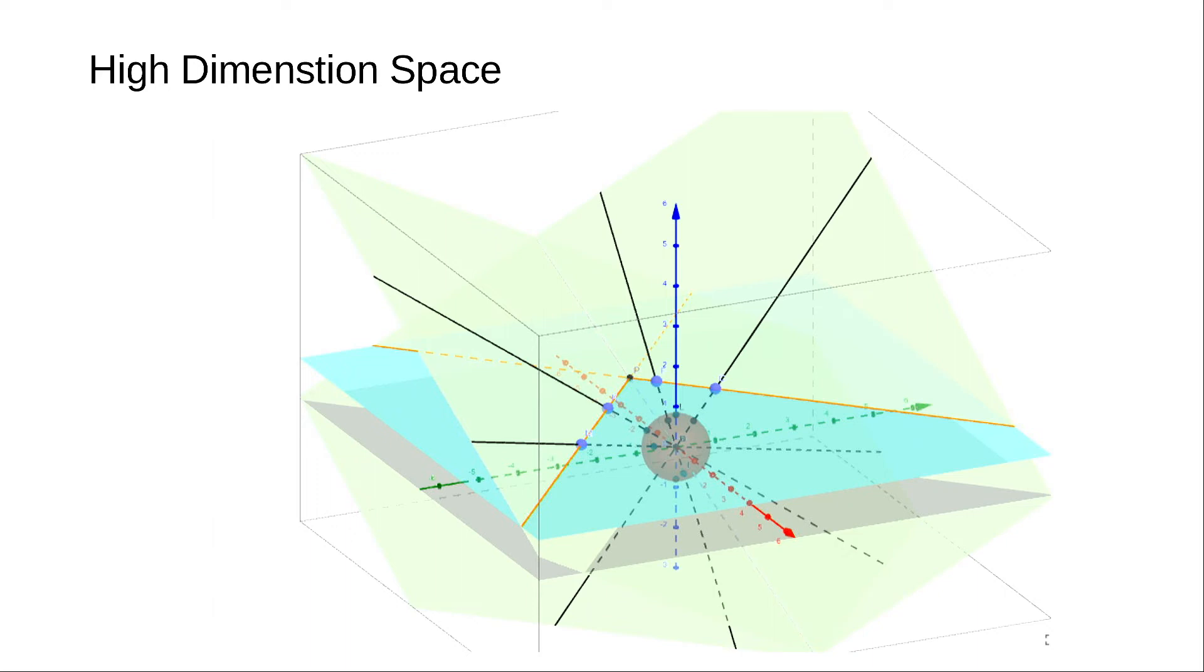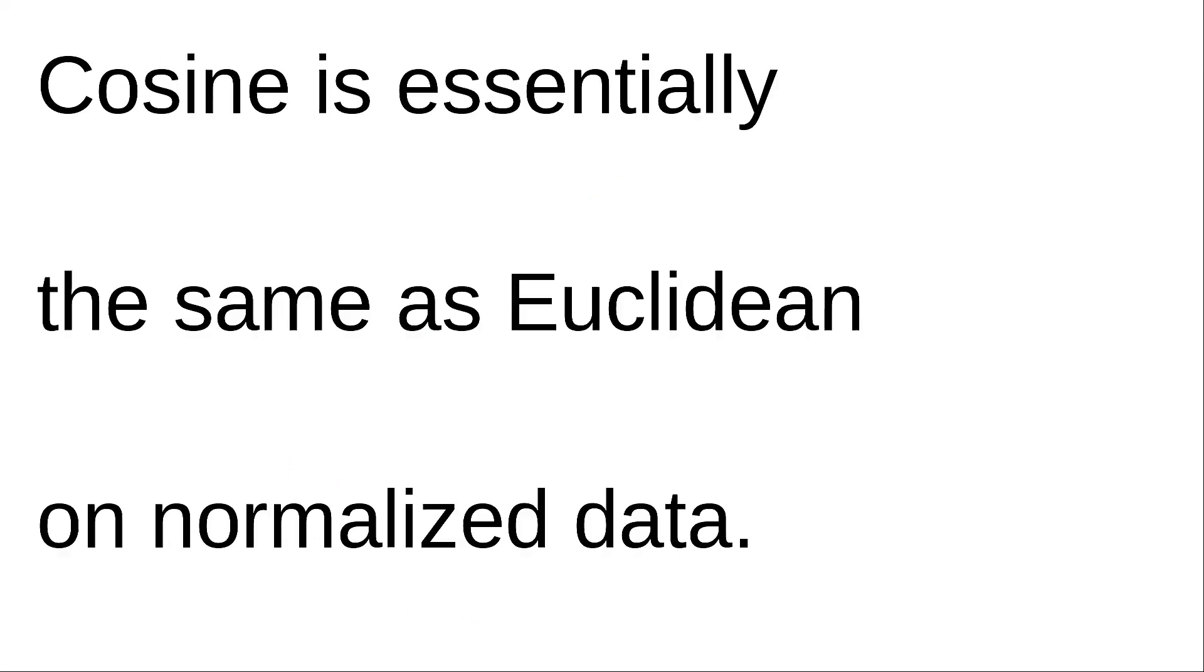It is easy to see that cosine is essentially the same as Euclidean on normalized data. The normalization takes away one degree of freedom. Thus, cosine on 1000 dimensional space is about as cursed as Euclidean on a 999 dimensional space.